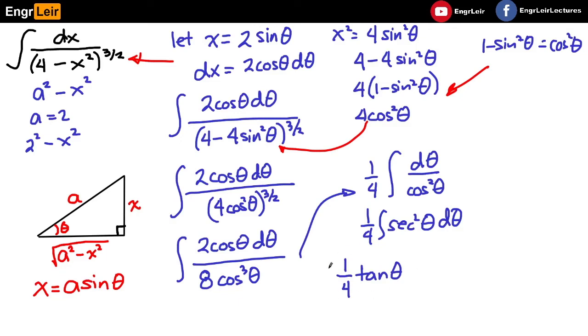Now, maka theta pa rin tayo. Tingnan natin ito. Ano ba ang tangent ng theta dito sa figure natin? Now, we can see that the tangent of theta is x, yung opposite over yung adjacent side. So, x over yung square root ng a squared, which is 4, minus x squared. So, substituting this equation, we get the integral as 1 fourth ng x over square root of 4 minus x squared. Huwag kalimutan ang plus c. So, this is the integral.